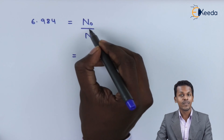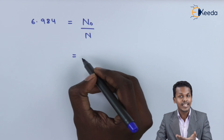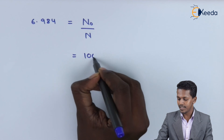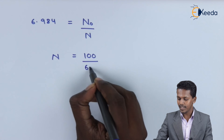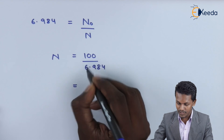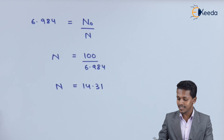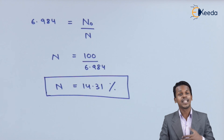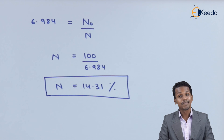We already know N₀ is 100 — the initial number of nuclei before disintegration. So 6.984 equals 100 divided by N. Rearranging, N equals 100 divided by 6.984, which gives 14.31. Since percentage was asked, 14.31% of the Phosphorus-32 sample remains after 40 days.